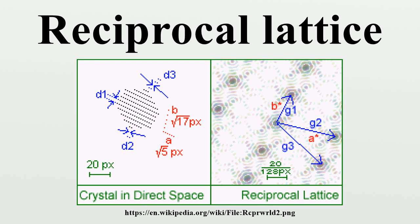In mathematics, the dual lattice of a given lattice L in an abelian locally compact topological group G is the subgroup L-perp of the dual group of G consisting of all continuous characters that are equal to one at each point of L.